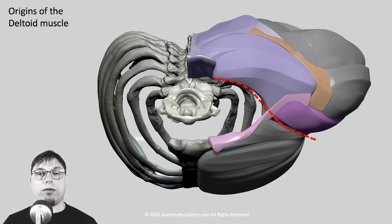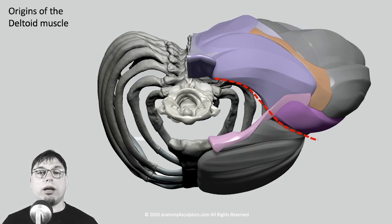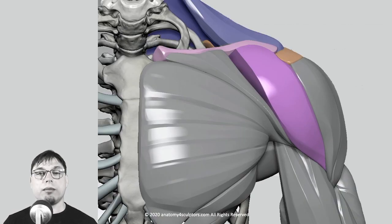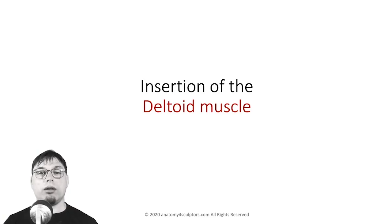The trapezius muscle also inserts into the same lateral third of the clavicle, so the trapezius and deltoid create an alignment. Looking from the front, you can see both the trapezius and the front part of the deltoid inserting into this lateral third of the clavicle. Now it's time to talk about the insertion of the deltoid muscle.